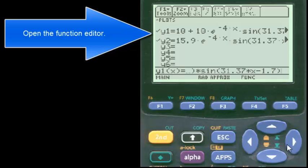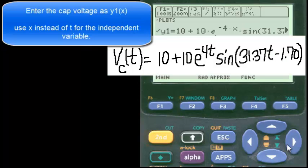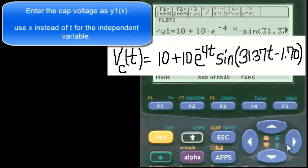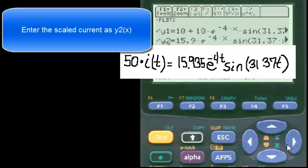Open the function editor. Enter the capacitor voltage as Y1. Use X instead of T for the independent variable. Enter the scaled current as Y2.